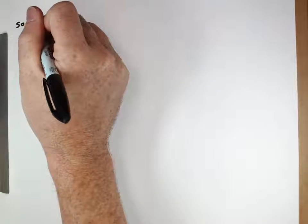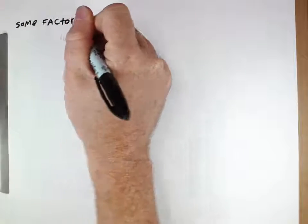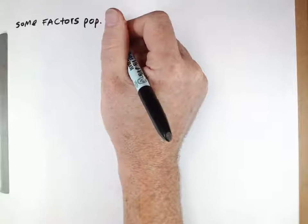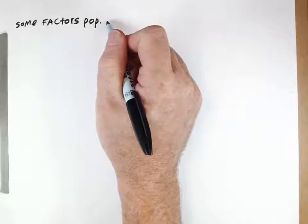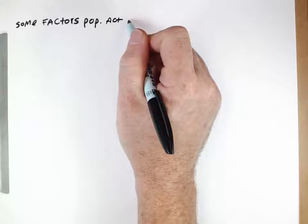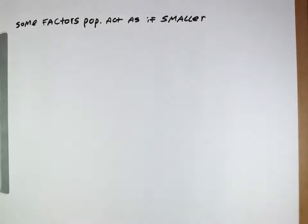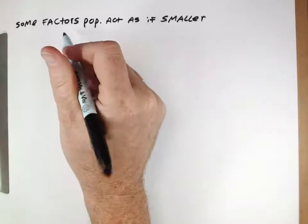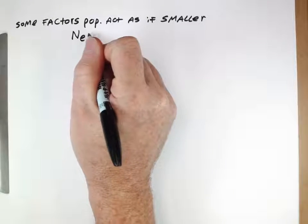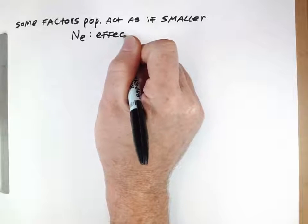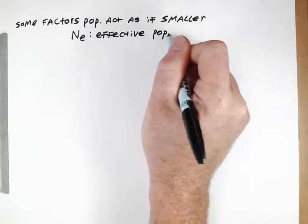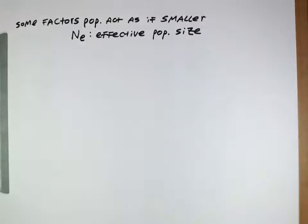As alluded to previously, there are some factors that can make a population act as if it's different than its actual population size. In general, there are some factors that make a population act as if it's smaller than it really is. When we're thinking about how quickly a population may lose its genetic diversity, we're going to define something called the effective population size — the number that allows us to predict how fast a population loses its genetic diversity, not the actual number of individuals, but some sort of representation of that number.